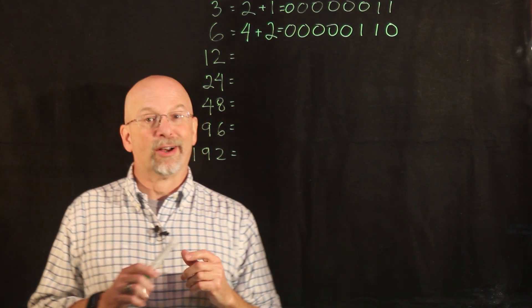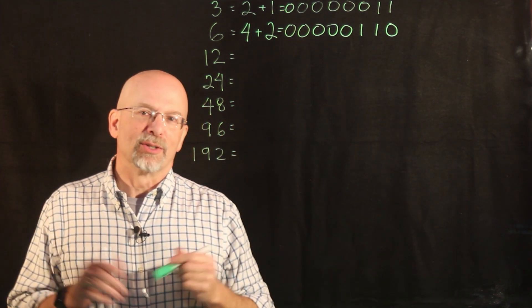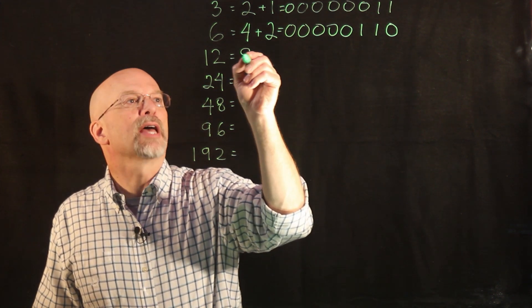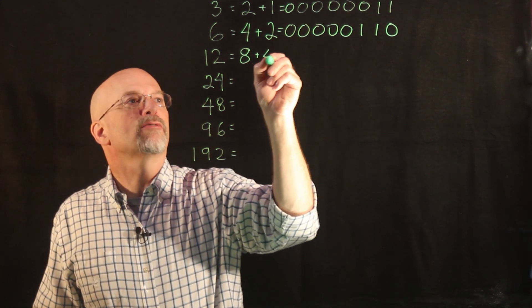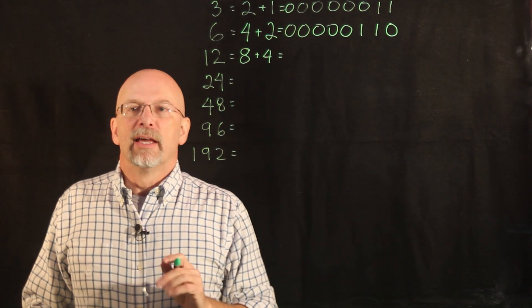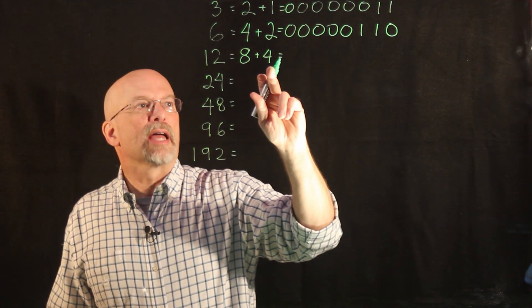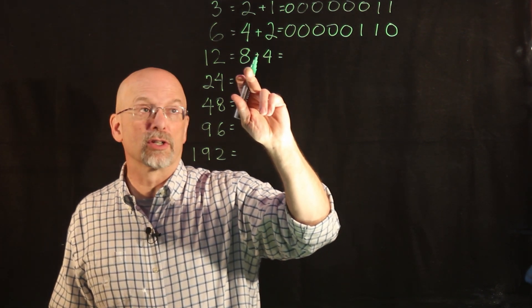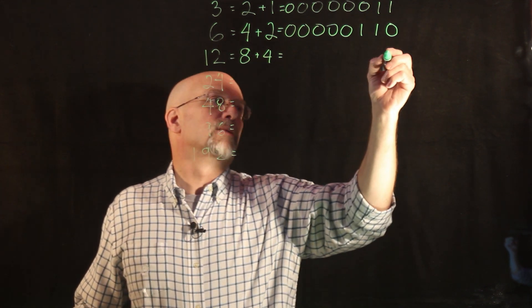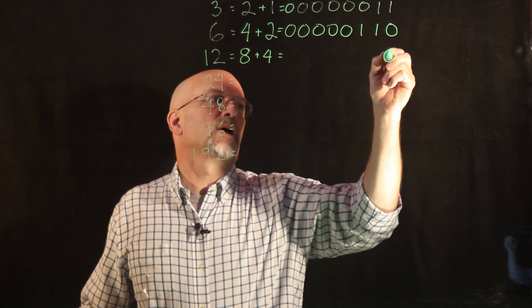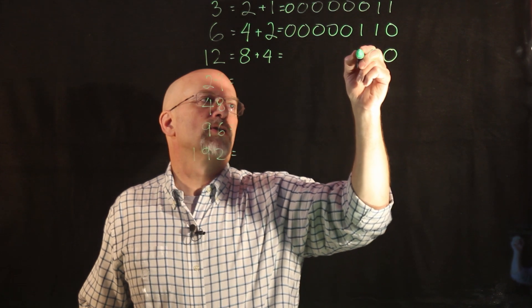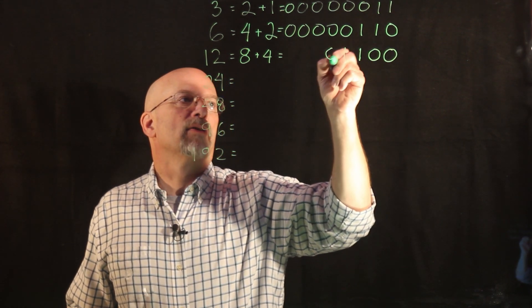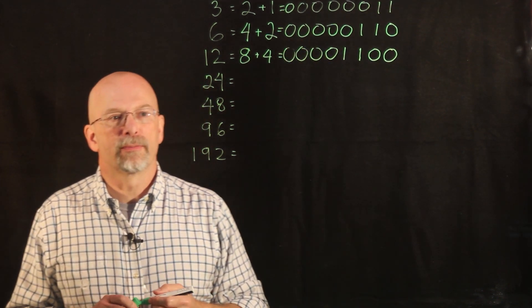Breaking 12 into its power of two components. Well, turns out there's still just two powers of two components. There's eight and there's four. That means that we have a one in the two squared position, and a one in the two cubed position. So we have zeros in positions zero and one, but a one in two squared, a one in two cubed, and then zeros everywhere else.